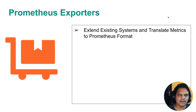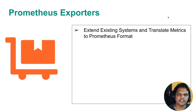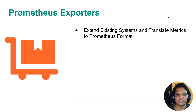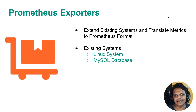A Prometheus exporter extends the existing system and translates the statistics and metrics available in that system into the Prometheus format. So the job of a Prometheus exporter is to extend existing tools and translate their statistics into the Prometheus format. When I say existing system, it could be any kind of system — you may have multiple Linux systems in your infrastructure.